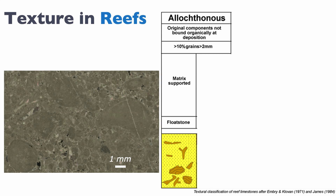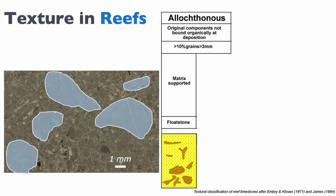Here's an example of a floatstone. Notice the scale bar at 1mm — you can see clearly that more than 10% of grains in this thin section are larger than 2mm. But these grains do not form a framework; they float in the matrix that is smaller than 2mm. That matrix can be micrite but it can also be just smaller grains.